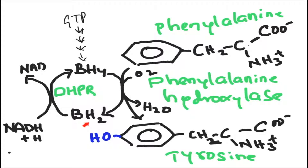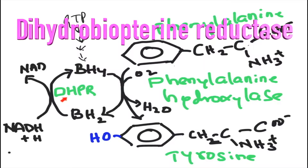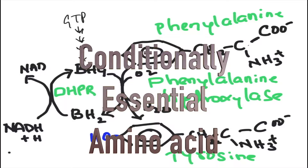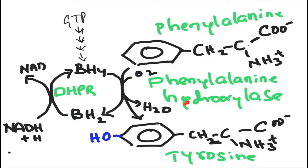Since tetrahydrobiopterin is synthesized in limited quantities, BH2 must be reduced back to BH4, and that job is done by the enzyme dihydrobiopterin reductase (DHPR). DHPR uses NADH + H⁺ and releases NAD⁺. With both phenylalanine hydroxylase and DHPR working together, our cells convert phenylalanine into tyrosine. That is why tyrosine is considered a semi-essential or conditionally essential amino acid — we can synthesize it from phenylalanine as long as both enzymes are functional.